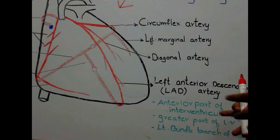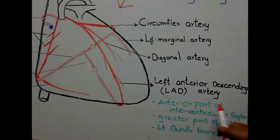This artery is the largest branch of left coronary artery and it supplies to larger area of left heart. It supplies to anterior part of interventricular septum, greater part of left ventricle, left bundle branch of His.